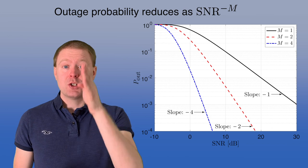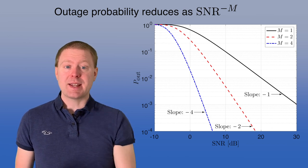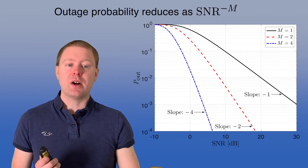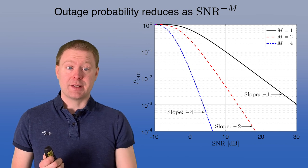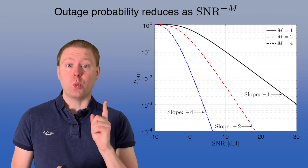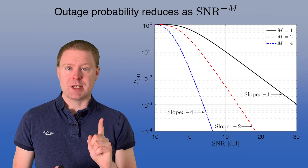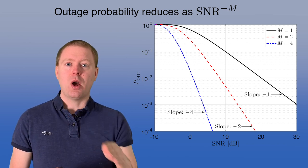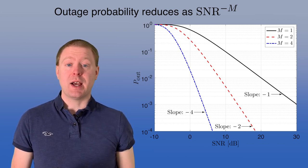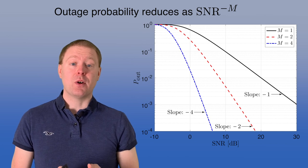Here is an illustration of this concept showing the outage probability in logarithmic scale on the vertical axis and the SNR in dB on the horizontal axis. The black solid line is showing what you get with one receive antenna and one transmit antenna. We have a slope of minus 1 because it goes down as the SNR to the power of minus 1.